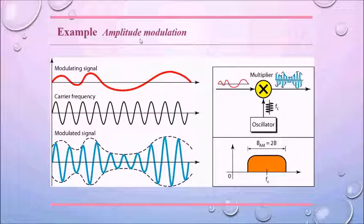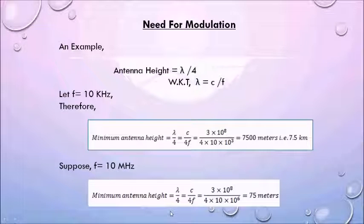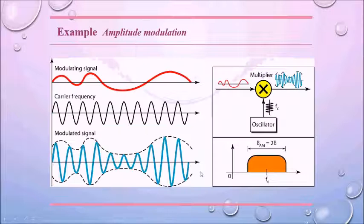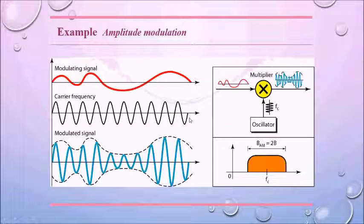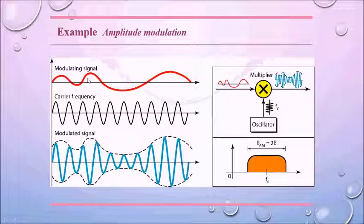So modulation is very much essential in everyday life. Now when we consider amplitude modulation, we have a message signal. Now what is the concept that we learned already is we need to increase the frequency. So I am going in for a high frequency signal, which is called a carrier signal. So my modulating signal, which is the message signal, is going to be low frequency and the carrier frequency is going to be high frequency.